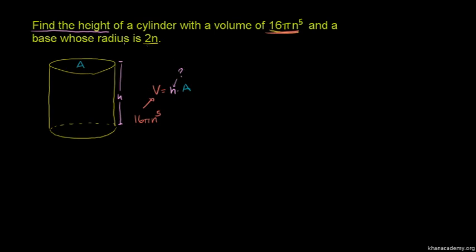so that right there is 16π n to the fifth. And then they tell us a base whose radius is 2n, so they're not telling us the area, they're telling us the radius. They're telling us that this radius right here, that that radius is 2n.